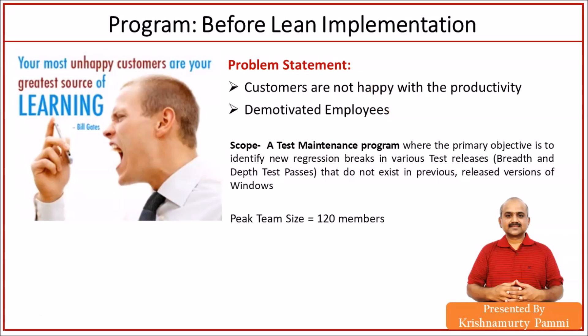The problem statement: customers were not happy with the productivity. They said, 'We have given this program to you for the last four years and you have not shown significant productivity improvement. If we go for bidding with other vendors, they may come up with better productivity.' So customers were not happy with the productivity the teams were showing on the ground.